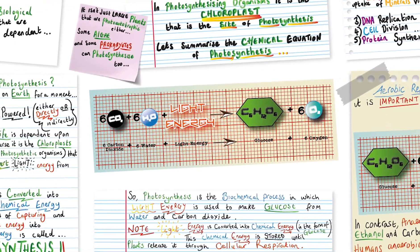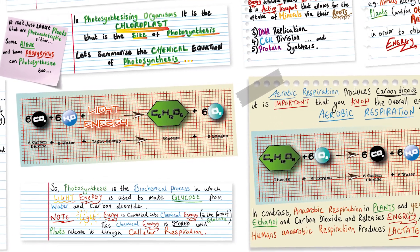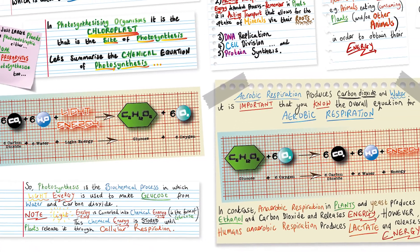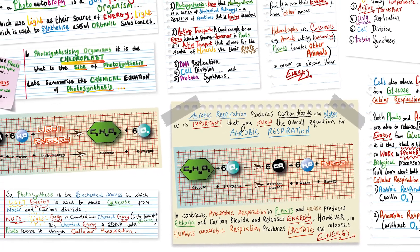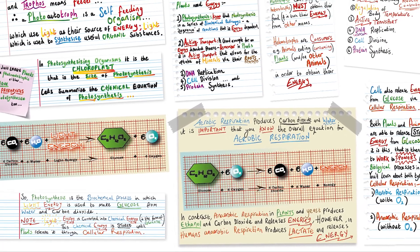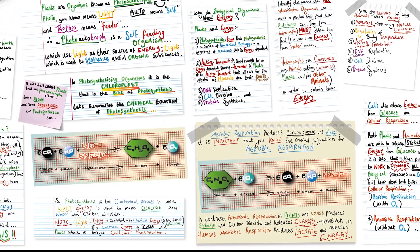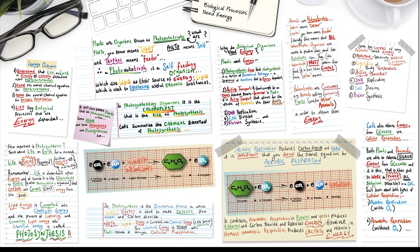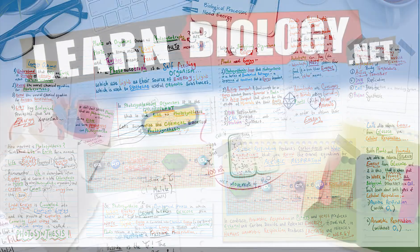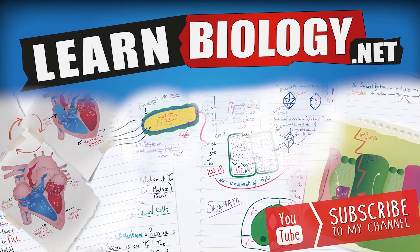Despite being a short lesson, that is a lot of information that you must know before continuing. So make sure you review this lesson as many times as you need, complete the accompanying lesson booklet, and then you'll be ready to go on to learn about photosynthesis and cellular respiration in more detail. Until then, take it easy. See you.